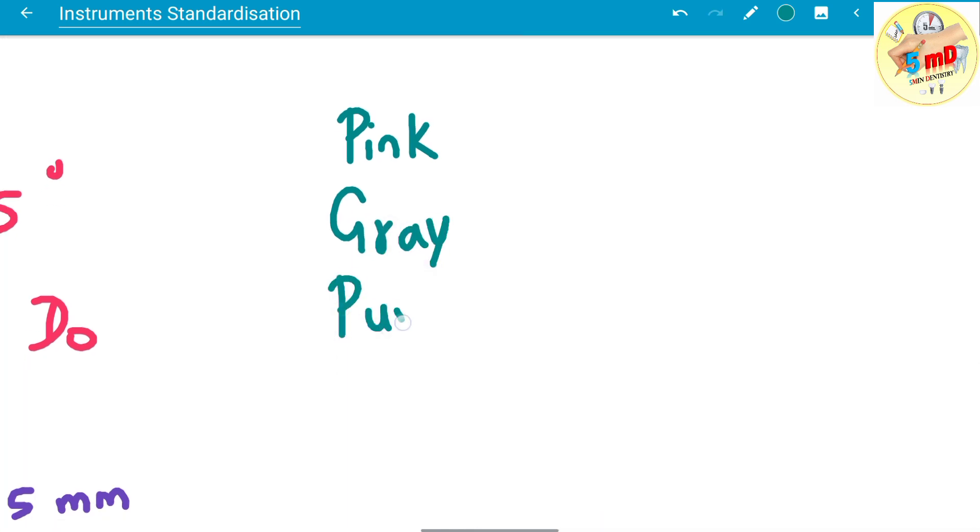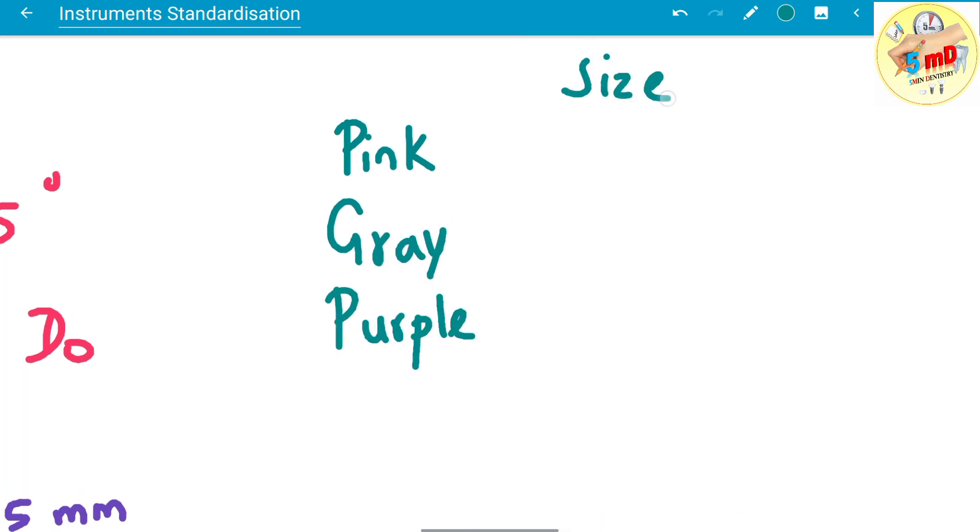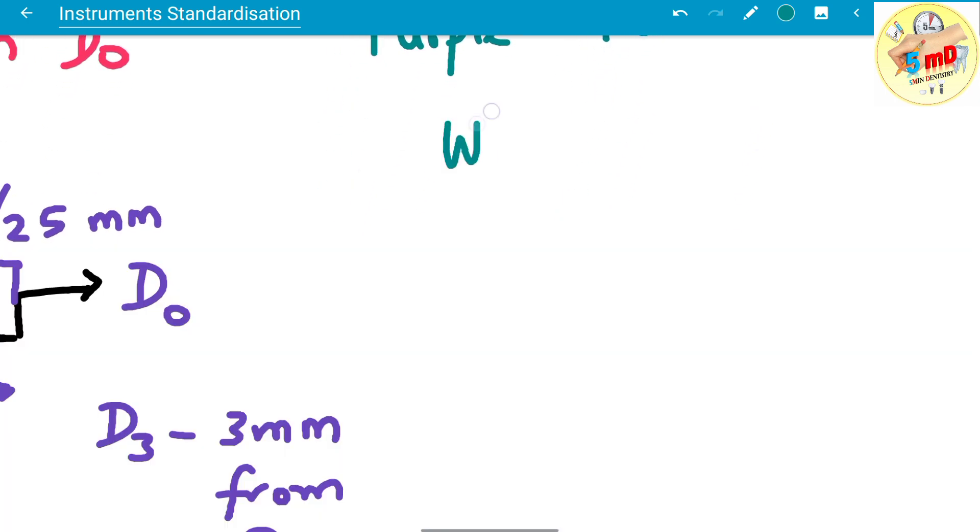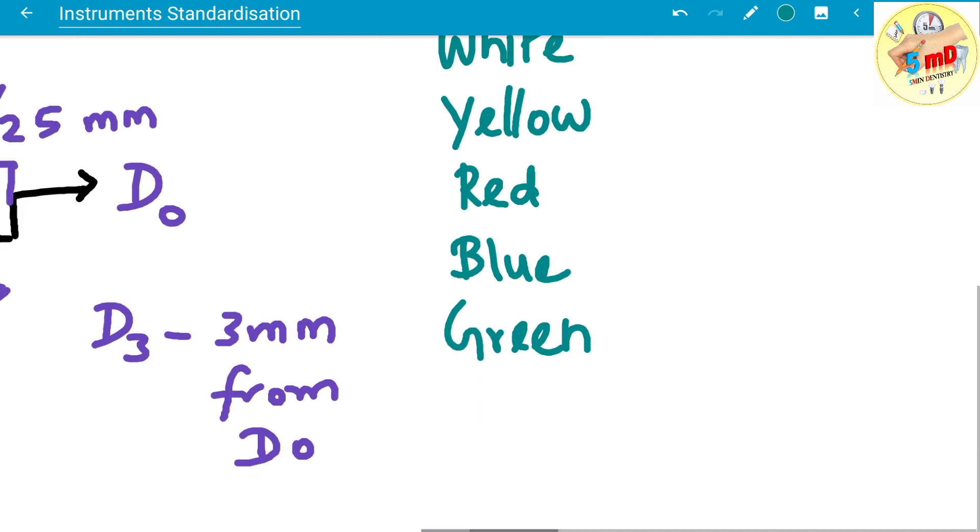After which a set of colors repeat. For example, they are white, yellow, red, blue, and green, after which black comes.